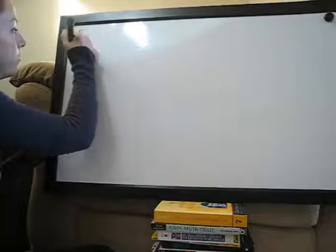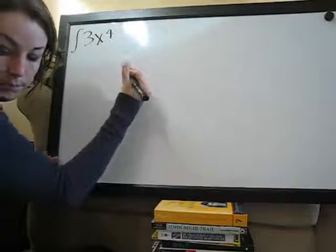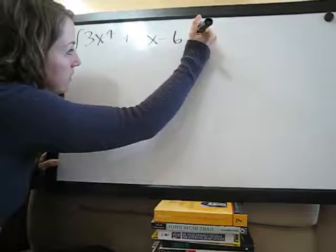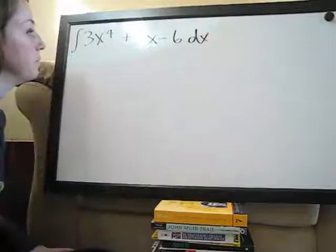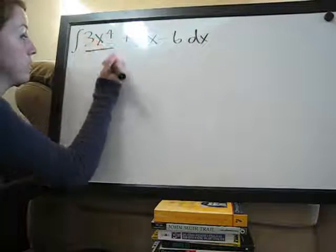The second basic integral problem we're going to do today is 3x to the 4 plus 5x minus 6 dx. Again we can take this term by term, so we're going to start with this term.